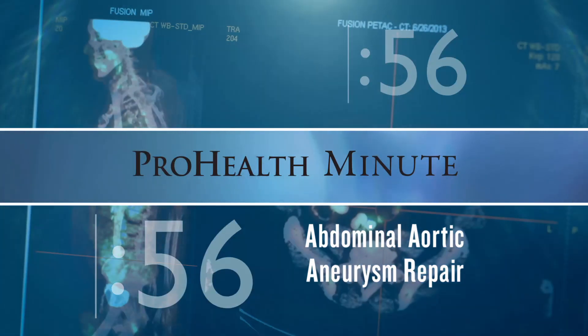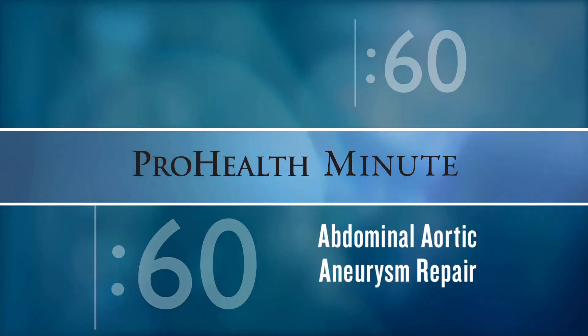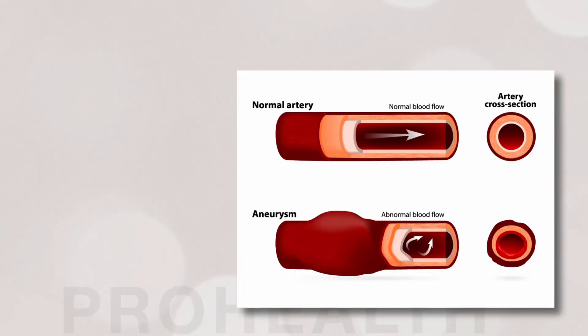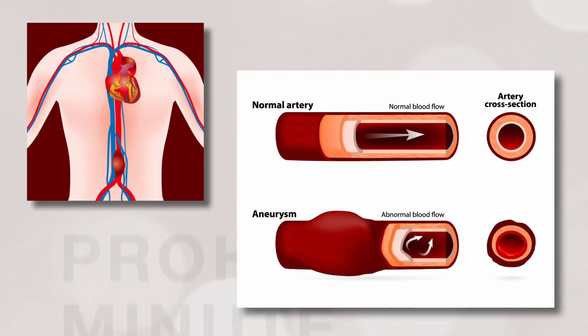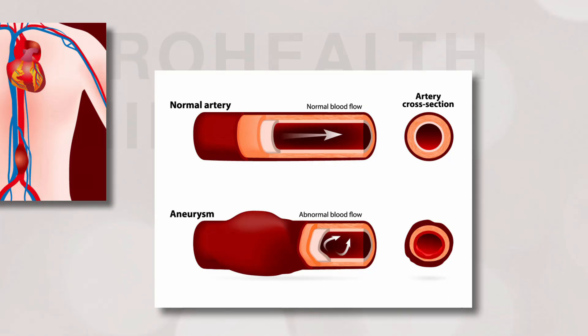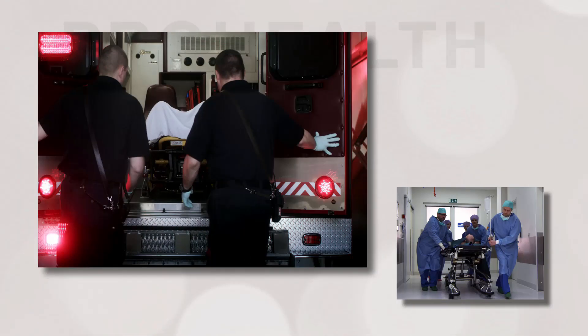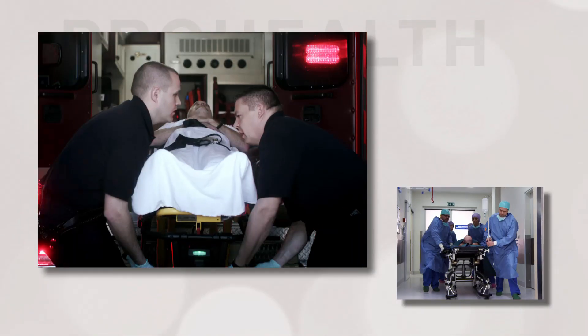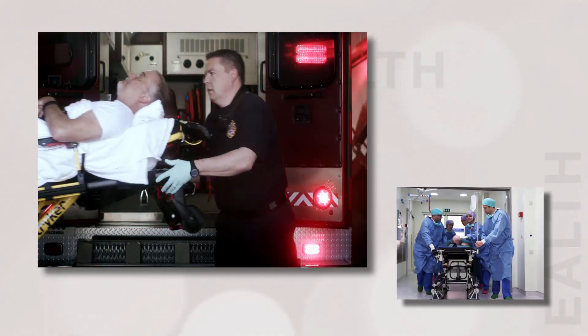An abdominal aortic aneurysm occurs when there is an injury or tear to the inner layer of the abdominal aorta, and a bulge occurs and the vessel expands. The aneurysm can leak or it can rupture, and then it becomes a life-threatening situation.